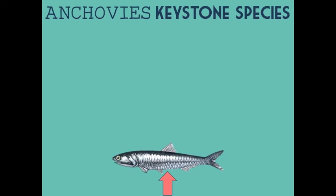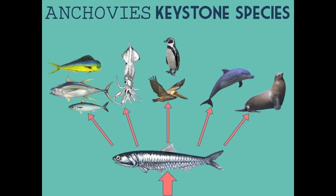From fish like sardines and tuna, to seabirds including the Humboldt penguin, and sea mammals like sea lions, dolphins, and whales — the anchovy is very important to its ecosystem because so many other animals depend on it for food.